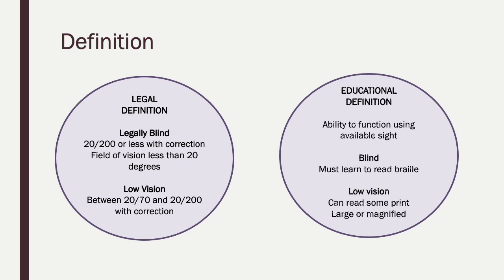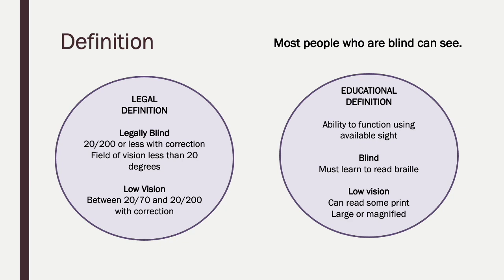Moving on to the educational definition, that's the ability to function using the available sight. So when a child is blind, they must learn to read with Braille. And if they have low vision, they can read some print or large or magnified text. Now it's important to know that most people who are blind can actually see.